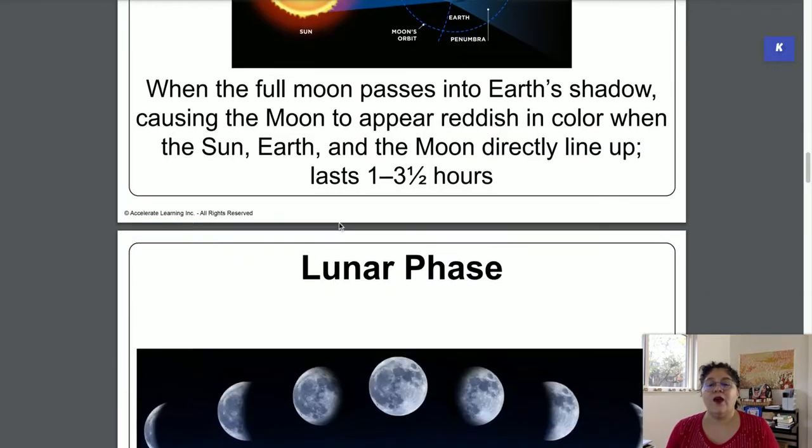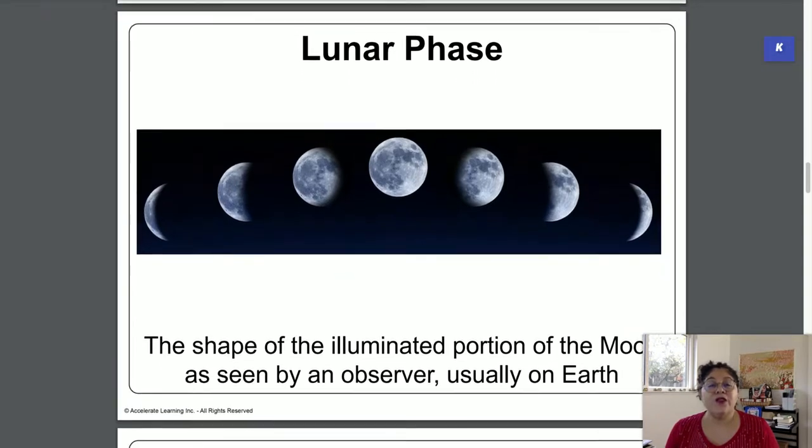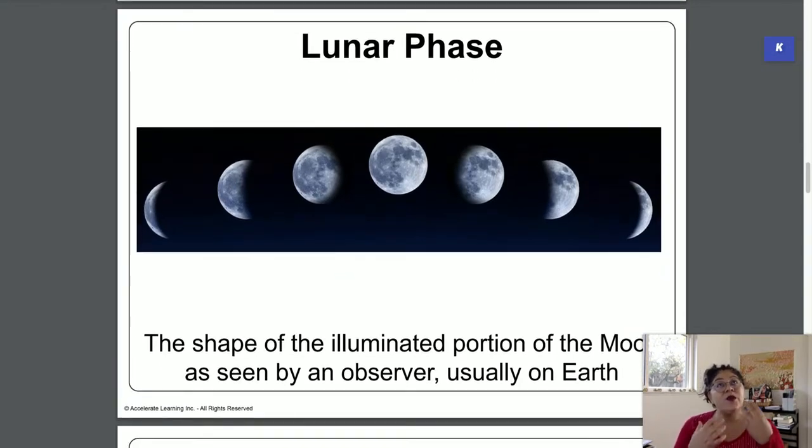Okay, now we're gonna talk about the lunar phases. The lunar phases are the different ways that we can see the moon from the Earth. Now what we're looking at is the reflection of the sunlight on the moon.